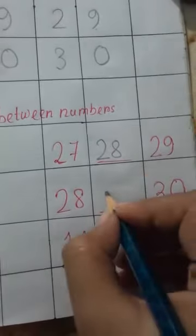2, 8, 28 and 3, 0, 30. What comes between? 2, 9, 29.